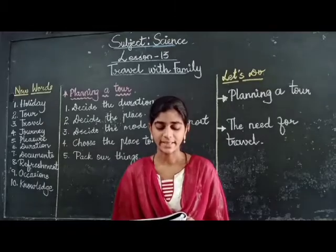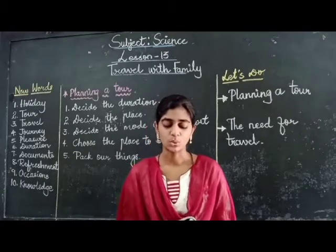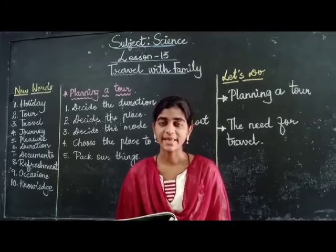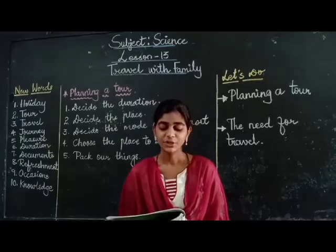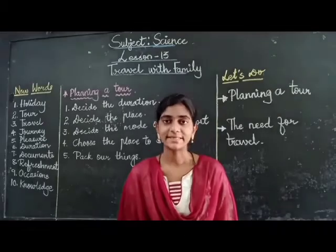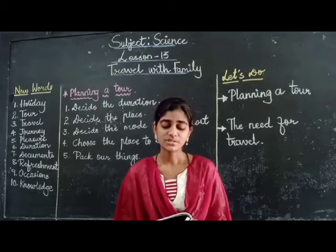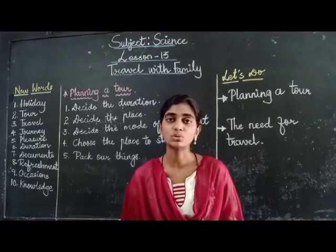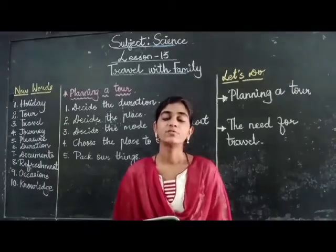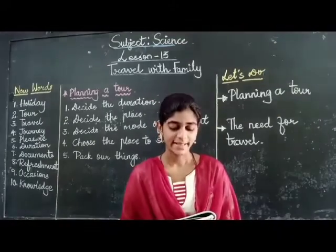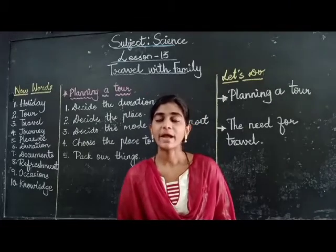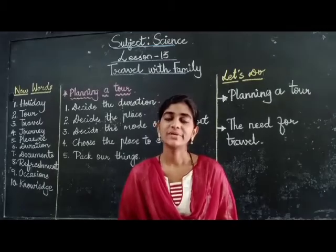Third, decide the mode of travel. We can travel by road — that is by bus or car — by train, or by airway, that is by aeroplane. We need to book bus, train, or plane tickets accordingly. Fourth, choose the place to stay: we need to book a hotel room, or if we have relatives or family friends there, we can stay with them.